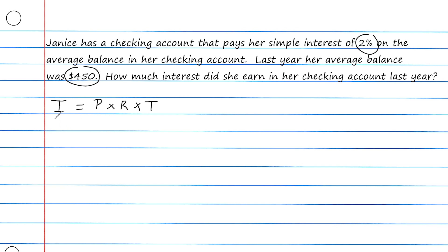To figure out how much interest Janice accumulated over a year, we substitute P with 450 — that is the principal amount. We multiply that by the rate, which is 2%, written as a decimal: 0.02. The amount of time is one year, so for time we write the number one, which represents one year.